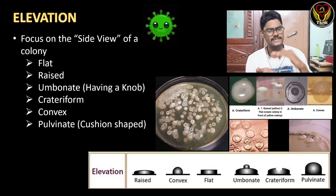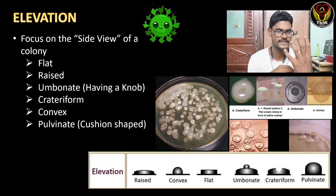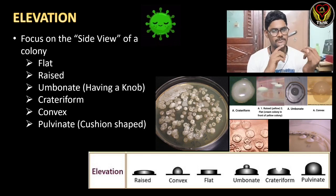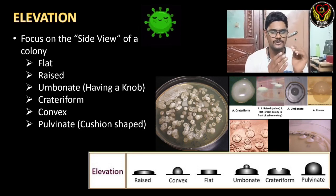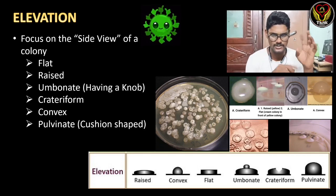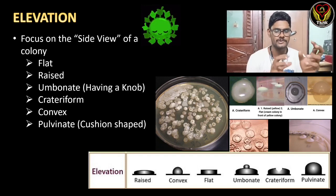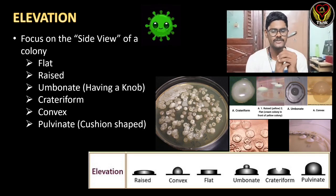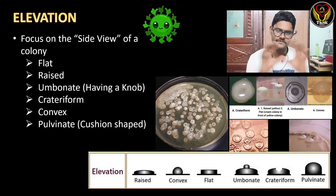Next is elevation. To study elevation we focus on the side view of the petri plate. The types of elevation are: flat (flat on the agar surface), raised (a little rise in the colony), umbonate (having a knob-like structure in the center), crateriform (opposite of umbonate — a pit in the middle), convex (center is highly elevated), and pulvinate (more like a cushion shape).